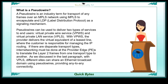With VPWS, the provider delivers the virtual equivalent of a leased line where the customer is responsible for managing the IP routing. If there are disparate transport types, internetworking must be done at the provider edge, PE, to translate the layer 2 frames from one transport type to another.